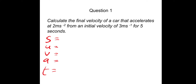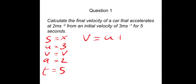Calculate the final velocity of a car that accelerates at 2 meters per second squared from an initial velocity of 3 meters per second for 5 seconds. Let's write down what we know: acceleration A is 2, initial velocity U is 3, time T is 5 seconds, and we need the final velocity V. We don't need S, so we put a cross next to it. We need an equation that doesn't have S in it but does have V.